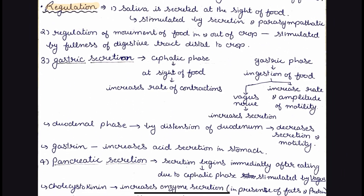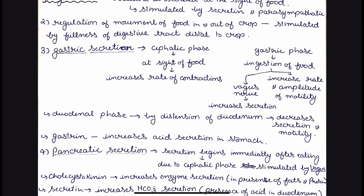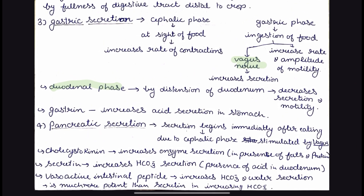For regulation, we have the cephalic phase, gastric phase, and duodenal phase. In the cephalic phase, just seeing the food will cause an increase in the rate of contractions. In the gastric phase, the food enters the digestive system, the vagus nerve is activated, and it increases secretion and gastrointestinal motility. In the duodenal phase, the gastric secretion of the proventriculus is decreased. Regarding hormones, gastrin increases acid secretion in the stomach. Gastrin wants digestion to take place — it will increase the motility and increase acid and enzymatic secretion in the proventriculus.